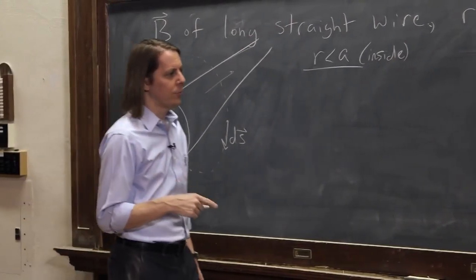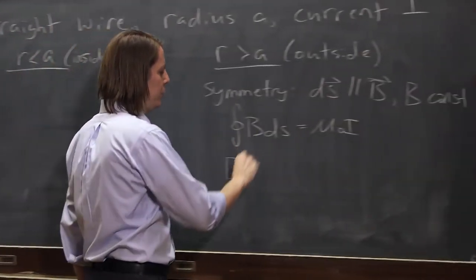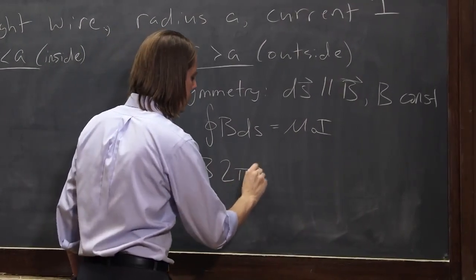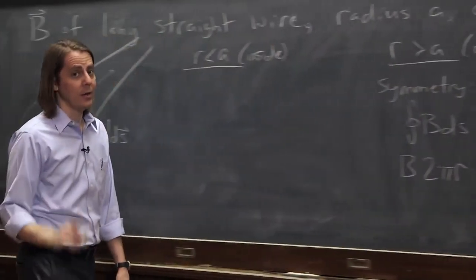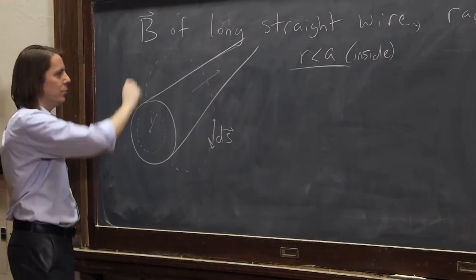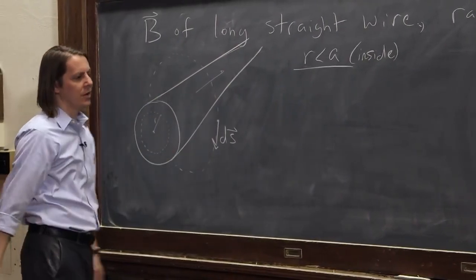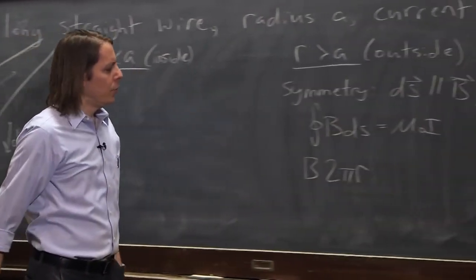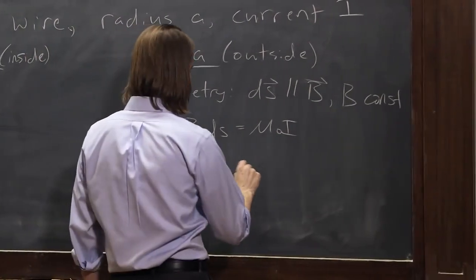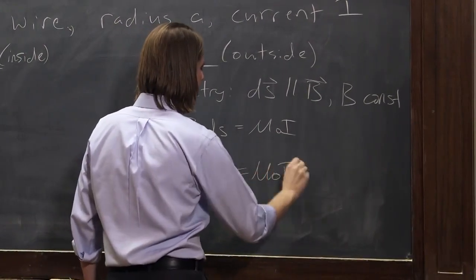Like we just talked about, that's the circumference of the loop. So that's 2 pi times R, not A. It's the circumference of the loop. The loop's radius is R. The wire's radius is A.